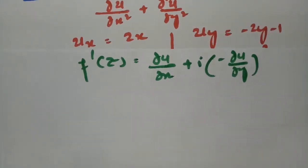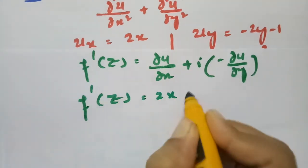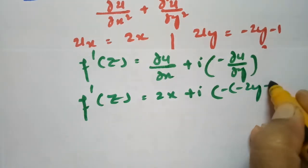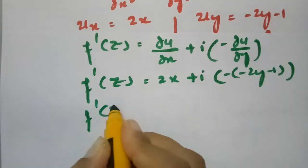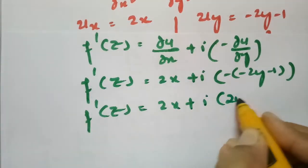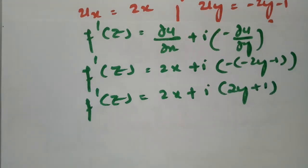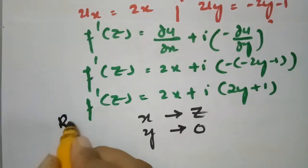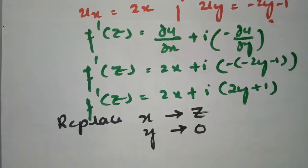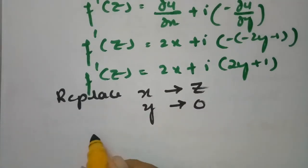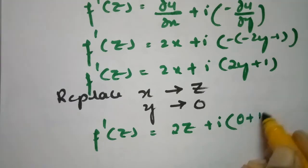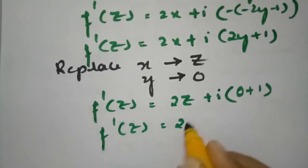So f'(z) = 2x + i(2y + 1). According to the Milne-Thomson method, we replace x by z and y by 0. After substituting, f'(z) = 2z + i(0 + 1) = 2z + i.